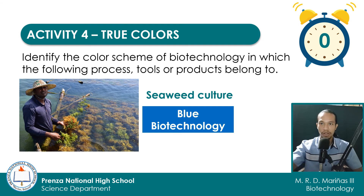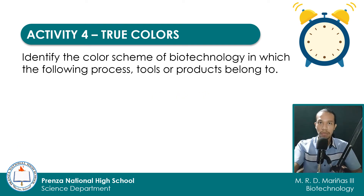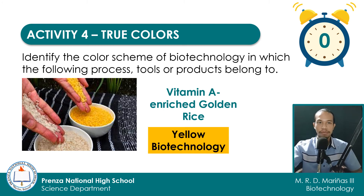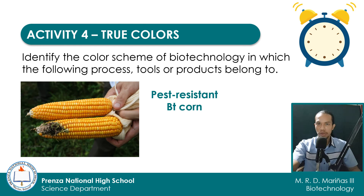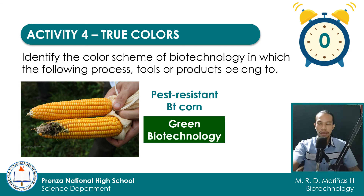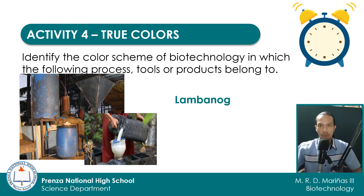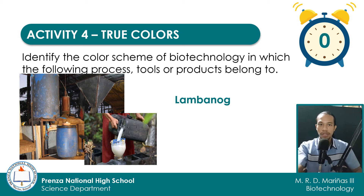The answer for seaweed culture is blue biotechnology. For our second item, we have vitamin A-rich golden rice — the answer is yellow biotechnology. For our third item, we have pest-resistant BT corn — the answer is green biotechnology. For our fourth item, we have lambanog, an alcoholic beverage produced from the sap of the coconut flower stock — the answer is white biotechnology.